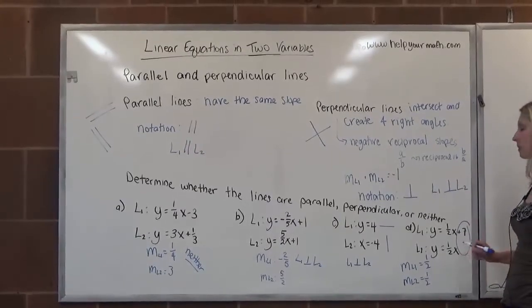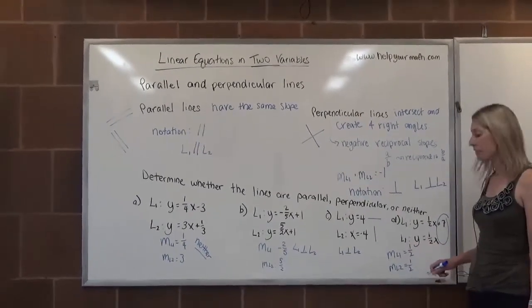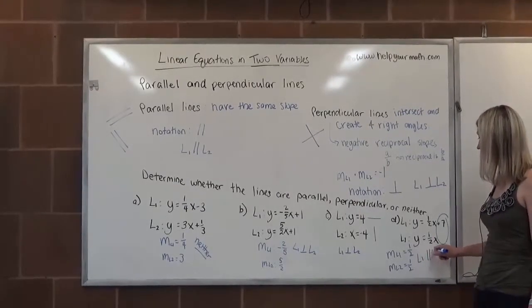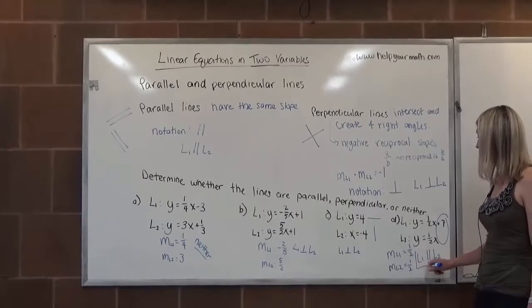Those are the same slope and they have different y-intercepts. This one has a y-intercept of seven. This one does not have a y-intercept. These two lines are parallel. We can notate that. We can say L1 is parallel to L2 because they have the same slope.